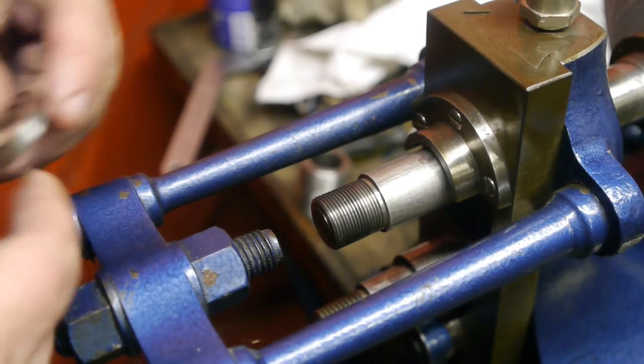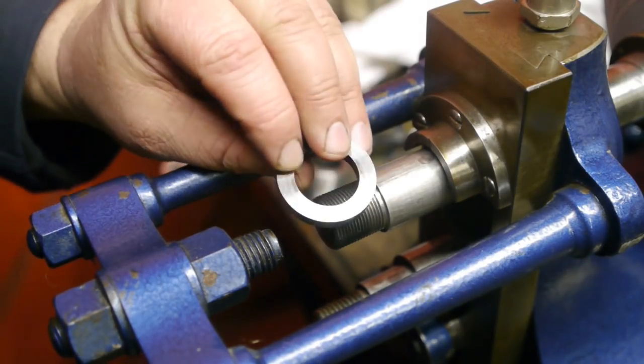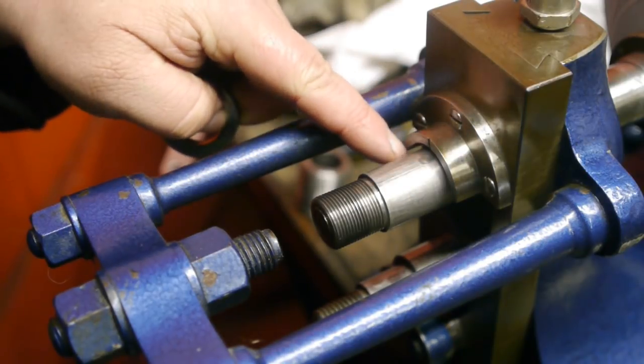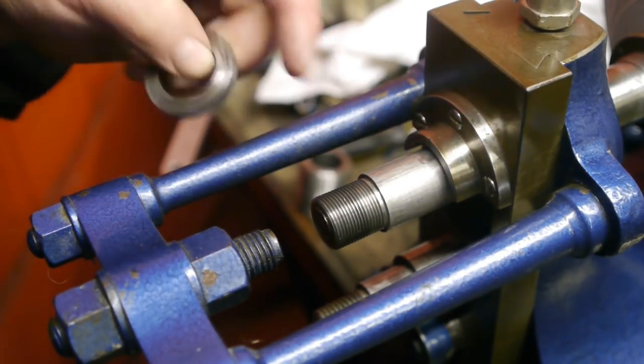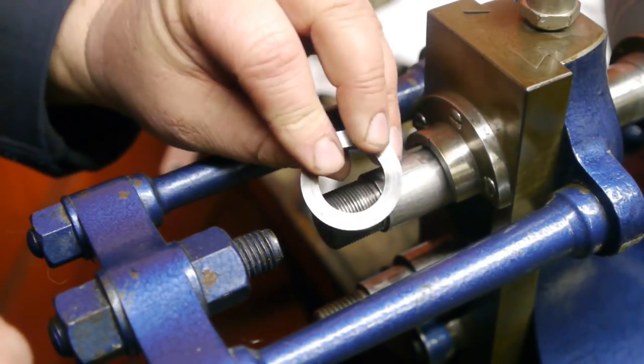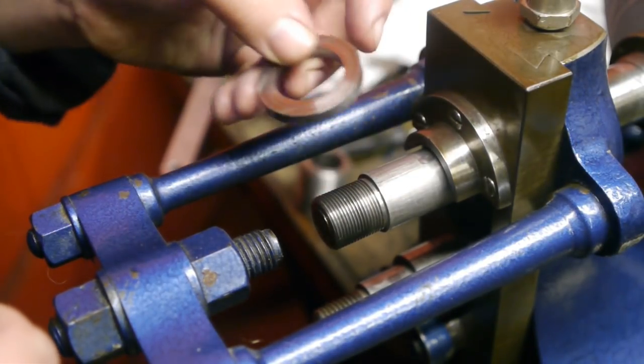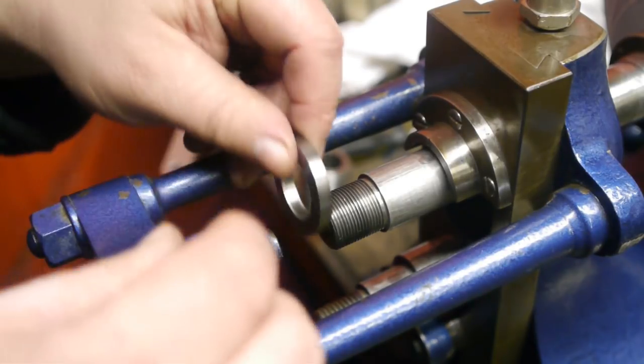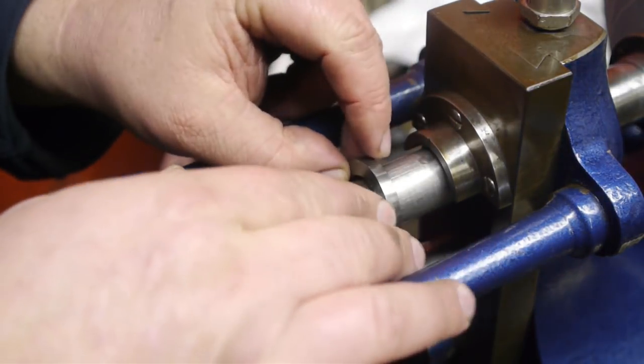Done. Next up is this part. It rides against this surface here and prevents the spindle from moving forward but there are wear marks on both sides so I don't know how it should go on there. This is basically a gamble.